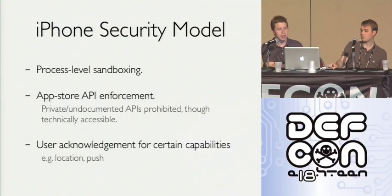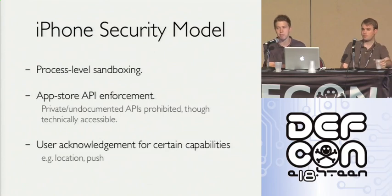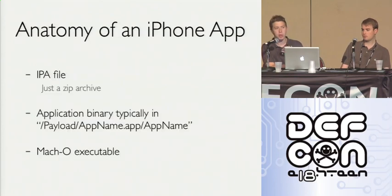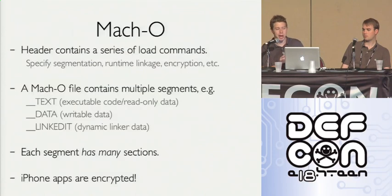On iPhone, the OS uses process-level sandboxing and the App Store enforces APIs. Unlike Android, you don't usually have acknowledgment of permissions except for push and location, where there's a user dialog asking if you want to allow it. An iPhone app, like an APK, is just a zip file. The application binary is in a certain location and uses an executable format called Mach-O — the same format as on OS X. The Mach-O header is a series of load commands specifying how the binary is segmented in memory, what frameworks it links to at runtime, whether it's encrypted, and so on.